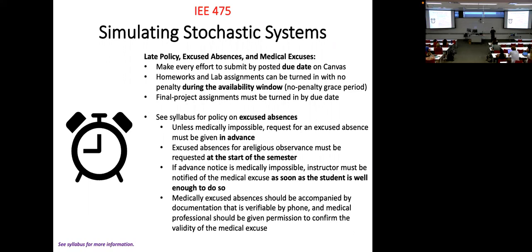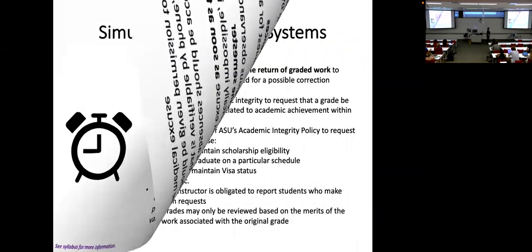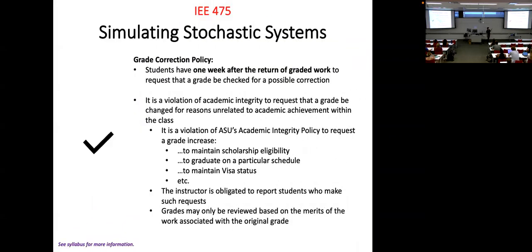For grade corrections: if you get a returned grade back, try to check on it. If you want to contest a grade — maybe the TA missed something — we'll give you one week from when the score gets to you. After that week, I can't make corrections because I can't set up the possibility of 60 students asking me to recheck things while I'm trying to get the final exam sorted.